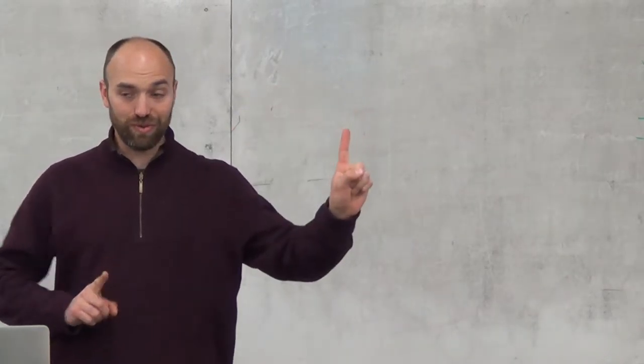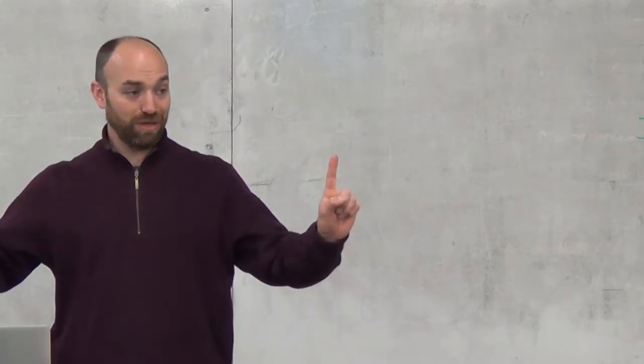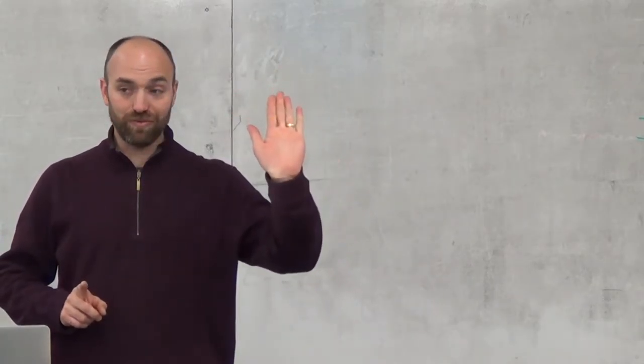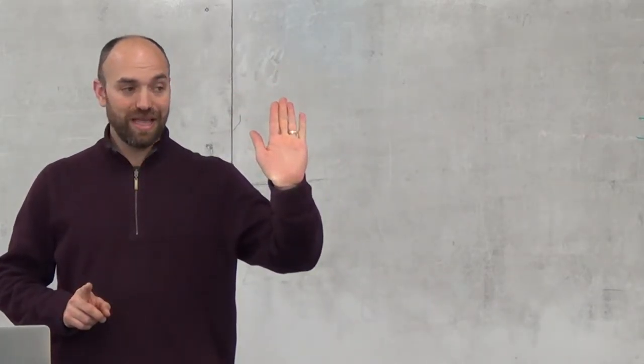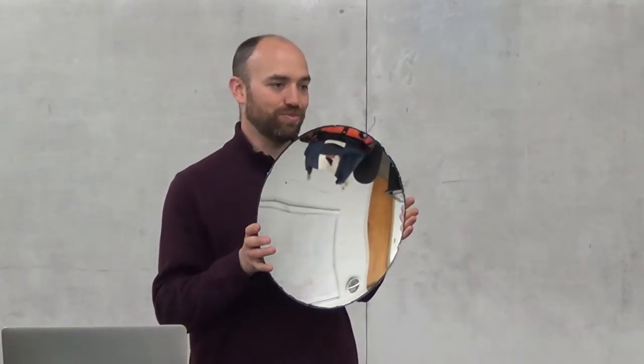Now we're going to deal with two special cases. You understand the two principles — reflection and refraction — straightforward. Now we're going to take those ideas of mirrors that are big and flat and bend them thin. All of a sudden everything gets bizarre.